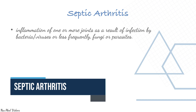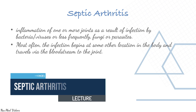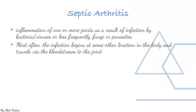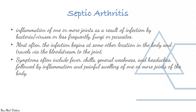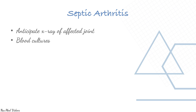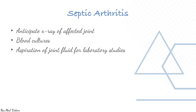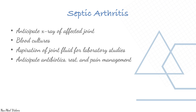Septic arthritis is inflammation of one or more joints as a result of infection by bacteria, virus, or less frequently fungi or parasites. Often the infection begins elsewhere in the body and travels via the bloodstream to the joint. Symptoms include fever, chills, general weakness, headaches, followed by inflammation and painful swelling of one or more joints. Anticipate X-ray of the affected joint, blood culture, and aspiration of joint fluid — the most diagnostic modality. Anticipate antibiotics and provide pain management. Never give antibiotics before performing aspiration of the fluid.